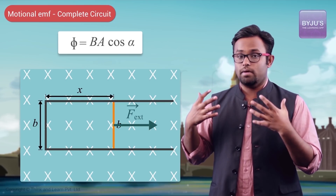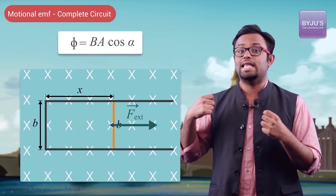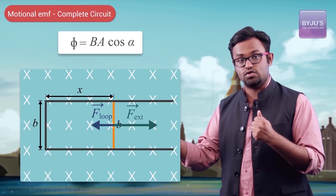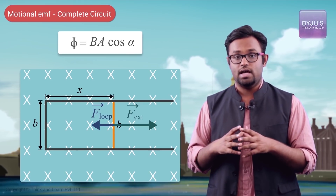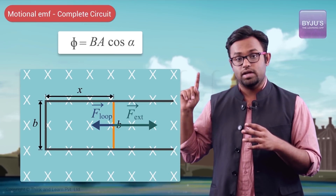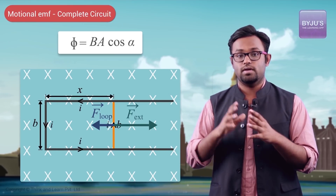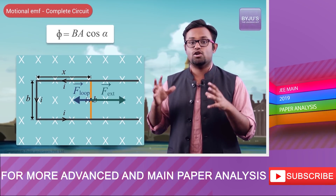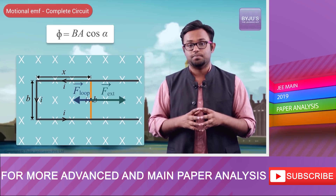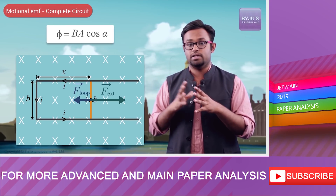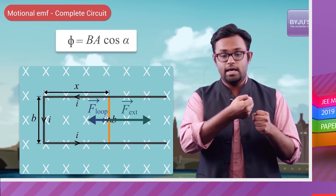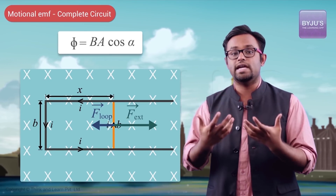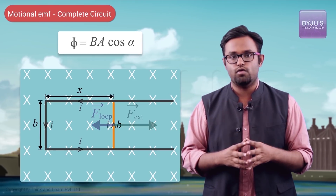The loop is being pulled this way, so the loop would have a current which applies a force in the opposite direction — opposing the external agent trying to change the flux. To have a force in that direction, the current should flow that way, because only then will dl in that direction crossed with B give you the opposing force direction. This is trying to oppose the pull created by the external agent. That's the second way of looking at it.